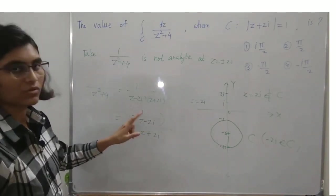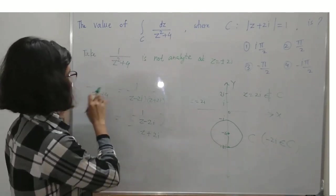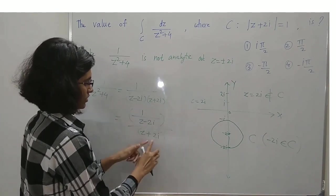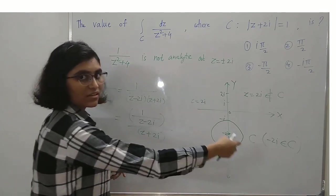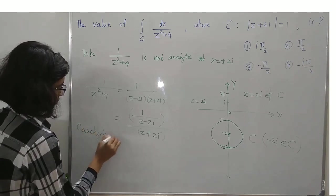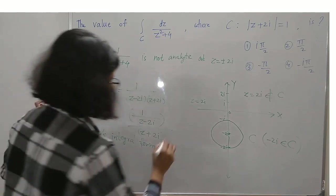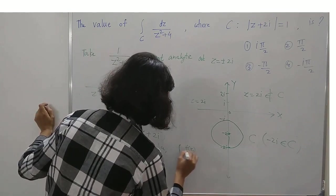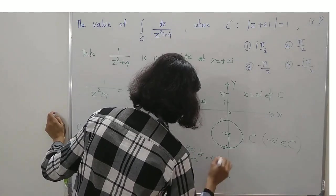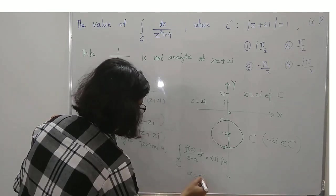We note that z + 2i = z - (-2i), so the singular point inside C is a = -2i. Recalling Cauchy's integral formula: ∮_C f(z)/(z - a) dz = 2πi · f(a), where a is inside the simple closed curve C and f(z) is analytic on and inside C.